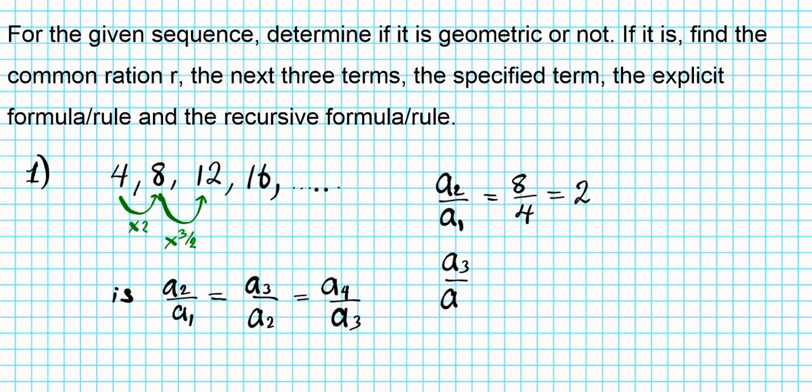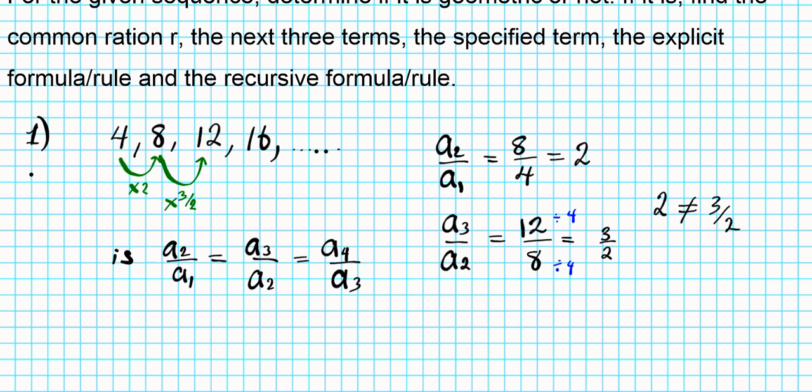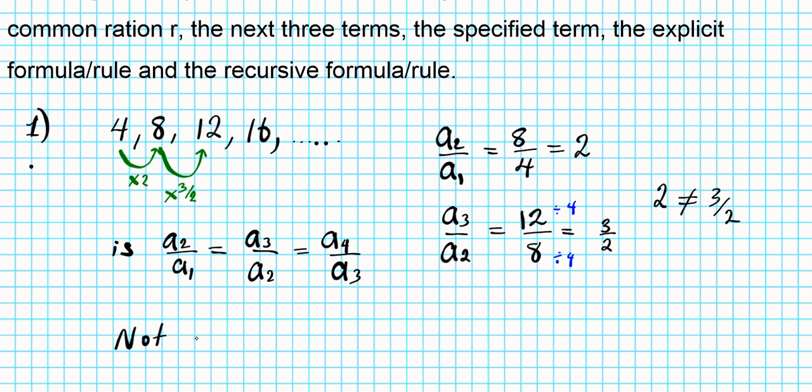Now a3 divided by a2, the third term 12 divided by the second term 8. If you simplify that by dividing top and bottom by the GCF which is 4, you end up with 3 over 2. Now since 2 is not equal to 3 over 2, this is not a geometric sequence as we indicated earlier. So the answer for number one, not a geometric sequence because we do not have a common ratio for the terms provided.